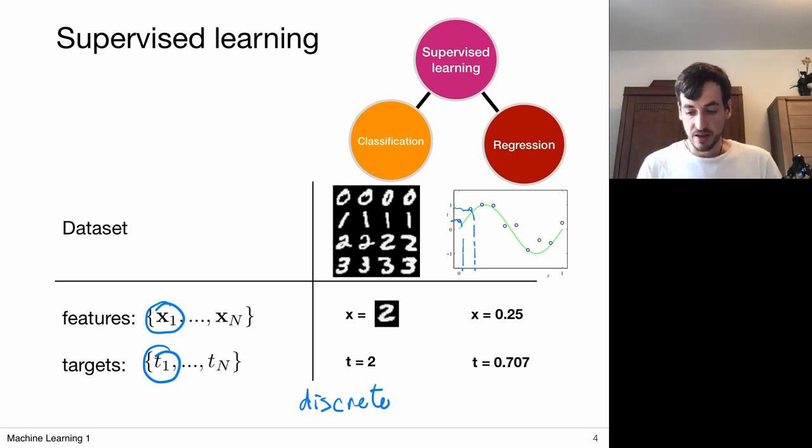What's characteristic of regression is that these targets can basically take on any value, any numerical value within some interval. In the regression case, we were interested in predicting some real number which represents this vertical axis. So that's characteristic of regression methods, that we're predicting continuous outputs.